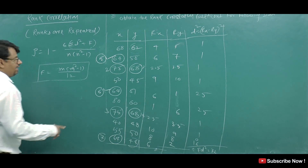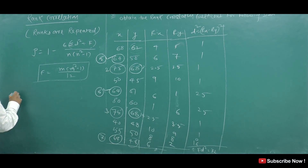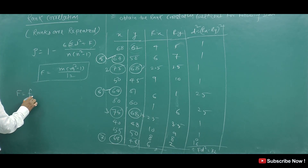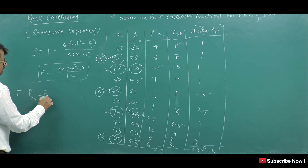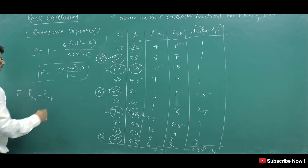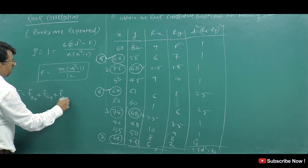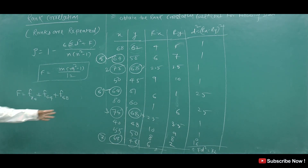Now for the F values, let's identify which values are repeating. Here 75 is repeating — let's call this F75. Next, 64 is repeating — this is F64. Then 68 is repeating — this is F68. So let's write these correction terms down.